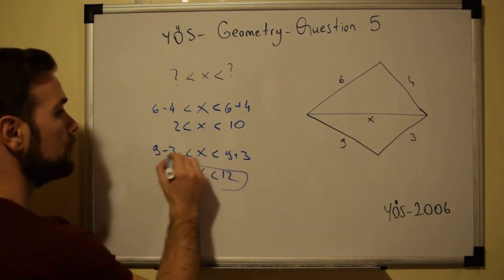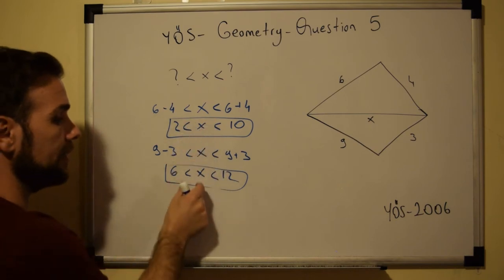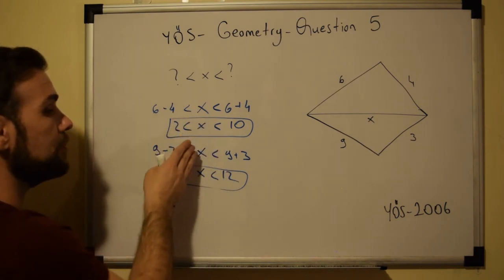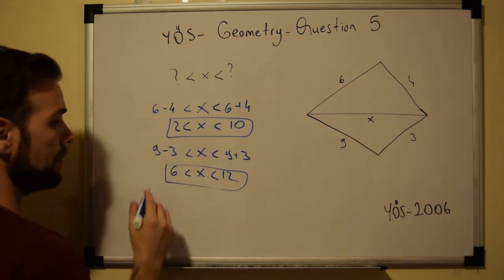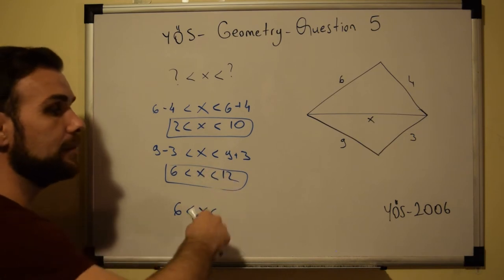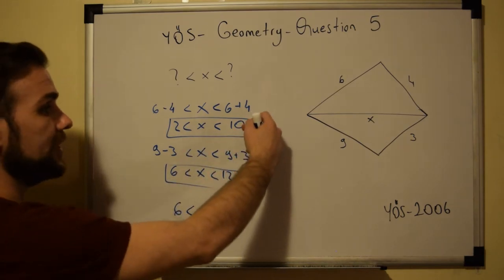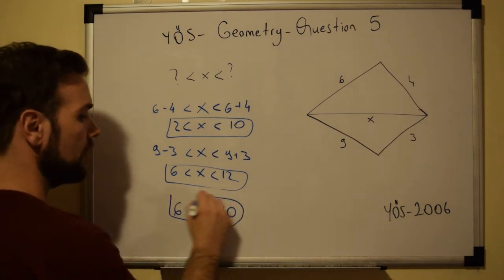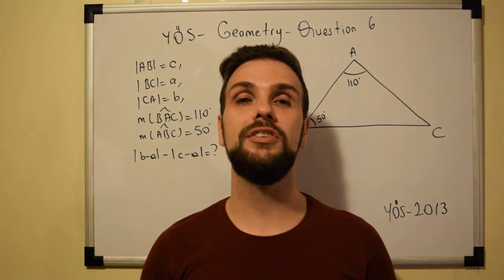Now we have two inequalities to combine. For the lower bounds, we take the highest number, which is 6. For the upper bounds, we take the lowest number, which is 10. Therefore, X is between 6 and 10.